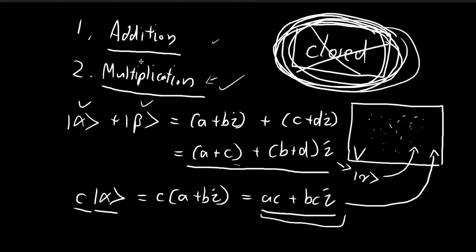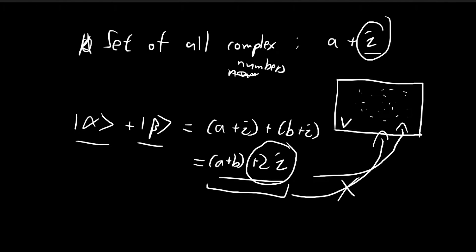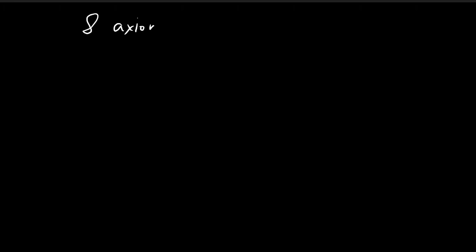To recap: you need to define vector addition, you need to define scalar multiplication, and these processes must be closed. Apart from this requirement, a vector space must also satisfy a set of eight axioms. Addition and multiplication must be defined in such a way that all eight axioms are satisfied.